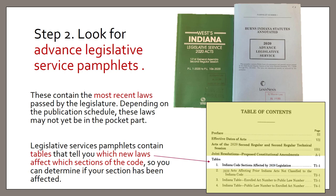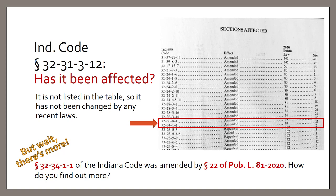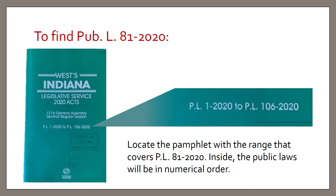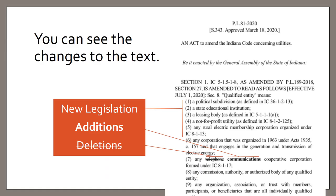Here's an example of the table showing which sections of the code have been affected by new laws, organized by section number. Indiana Code section 32-31-3-12 is not listed, meaning it has not been affected by any 2020 legislation. But section 32-34-1-1 was amended by Section 22 of Public Law Number 81-2020. Once you've located the public law number, you look at the front covers of the Indiana Legislative Service booklets to find the correct booklet, locate the text of the amending language. New language has no special formatting; additions are indicated by bold, and deletions are indicated by strikeout.